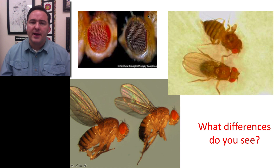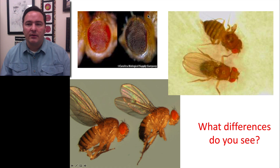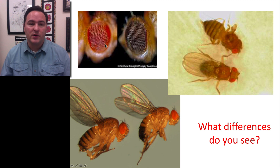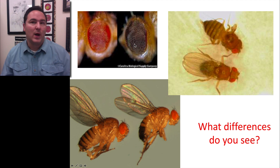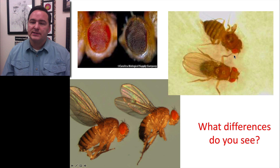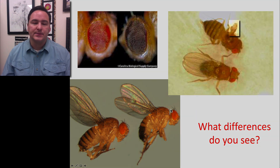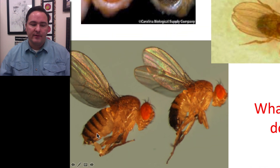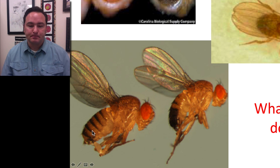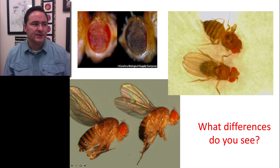If we zoom in on a couple of characteristics, you can see some large differences. For example, here we have different eye colors — some fruit flies have red eyes, some have darker eyes, some have white eyes. Here is an example of two fruit flies: the fruit fly on top lacks wings or has very tiny vestigial wings. And over here we have a fruit fly that has a much darker abdomen than the other. So clearly there are some differences here.